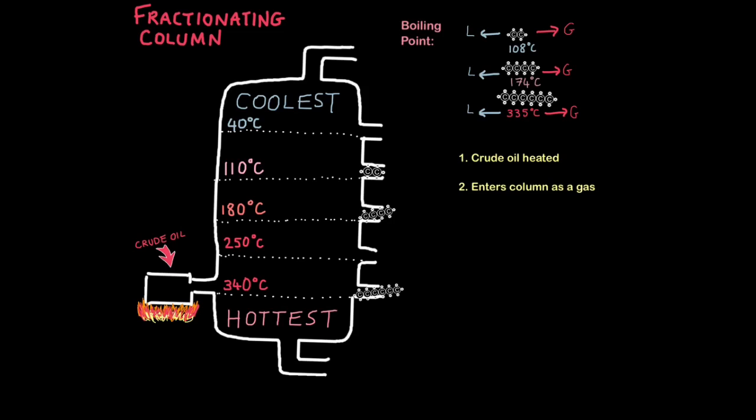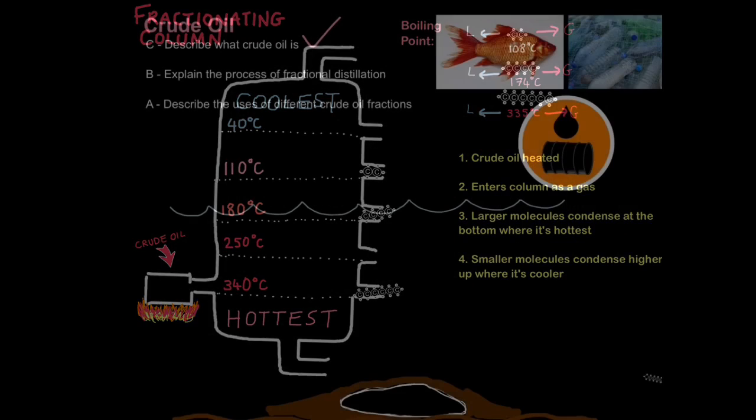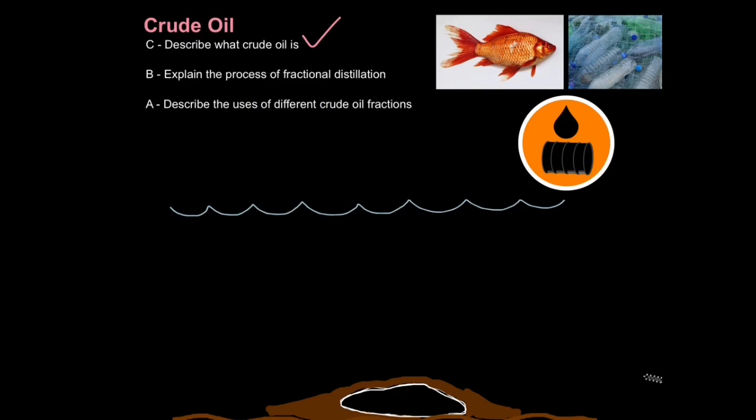Now that is quite a mouthful so how do we say this in a nice easy way? Well as I said you start off, crude oil is heated, it enters the column as a gas and then basically you just give an outline of what happens. So larger molecules condense at the bottom where it's hottest whereas smaller molecules condense higher up where it's cooler. So stick to these four sentences and you'll be fine. So that is how you explain the process of fractional distillation, just remember those four sentences.